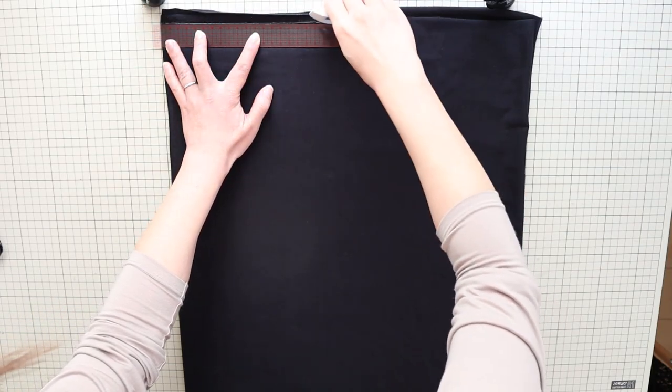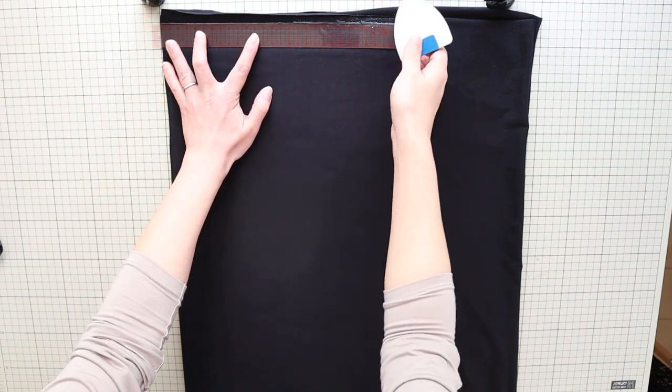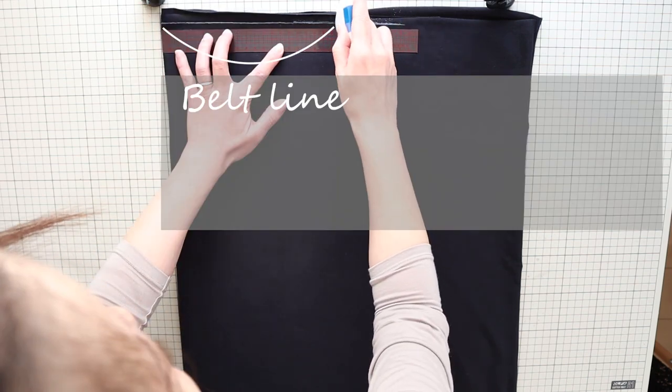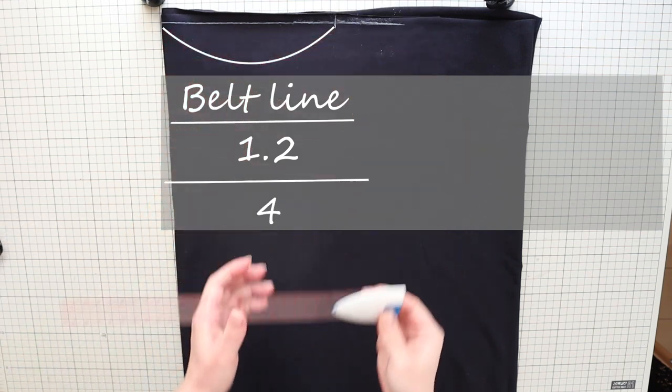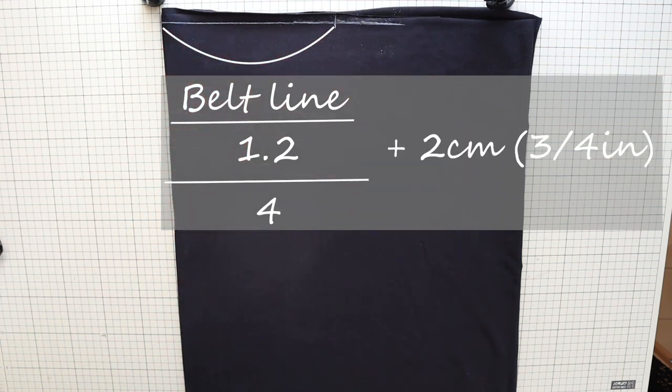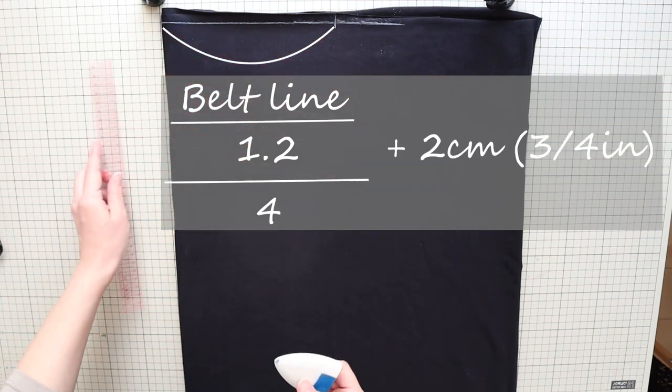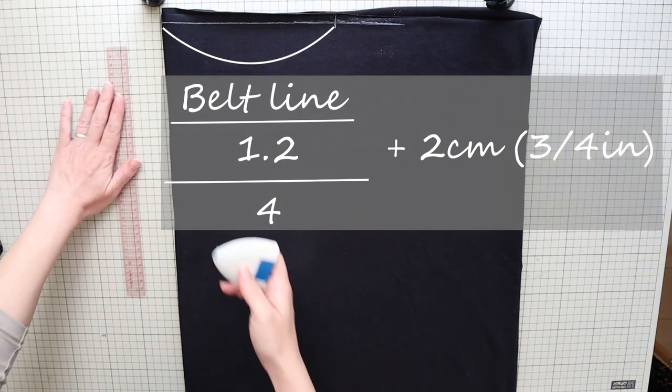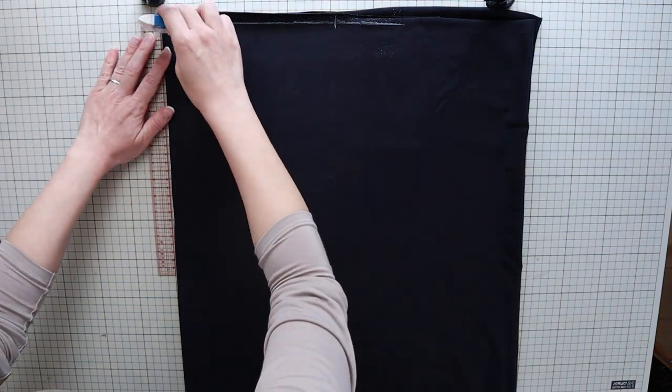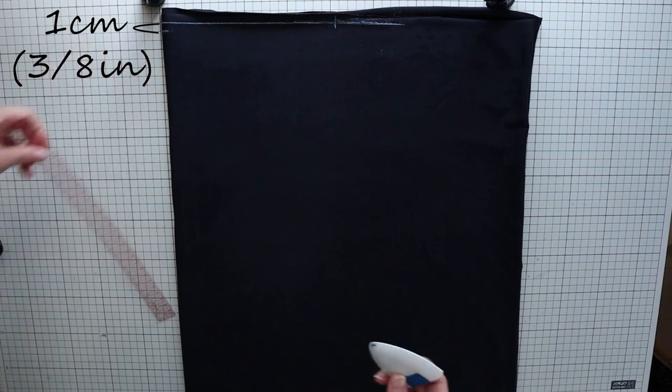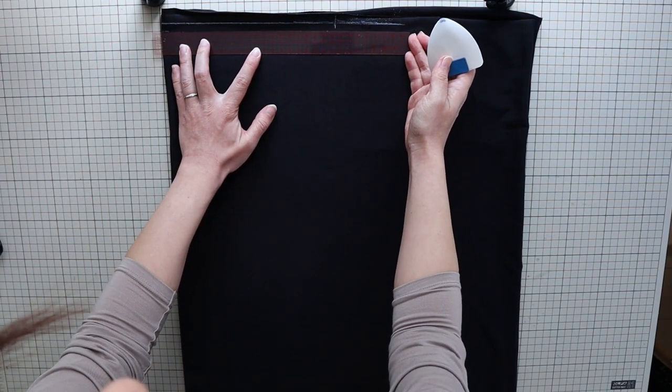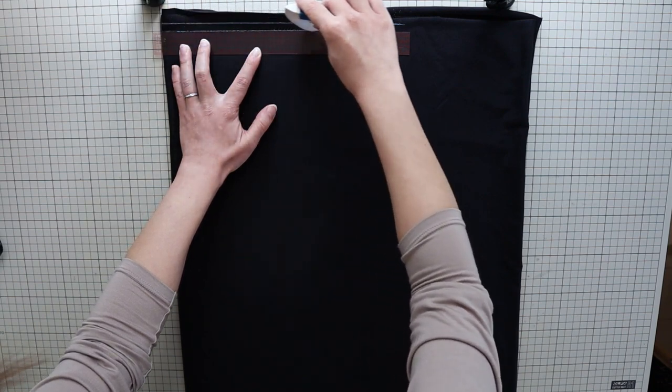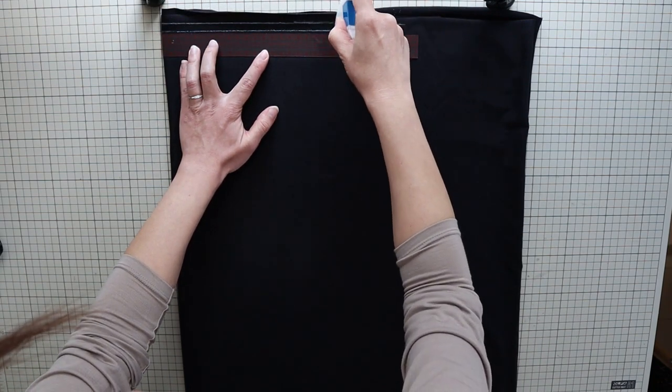At the top of the fabric, draw a horizontal line. And from the fold, measure your beltline divided by 1.2 and by 4 plus 2 centimeters or 3 quarters of an inch, and mark it on the line. Back on the fold, measure 1 centimeter or 3/8 of an inch from the first line and draw another horizontal line. Measure the same distance as above, and mark it on the line.